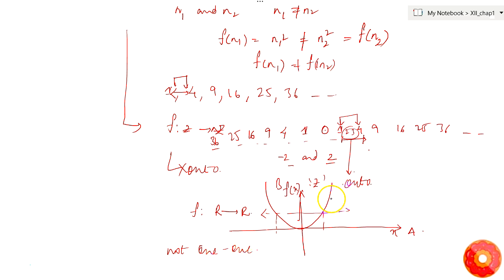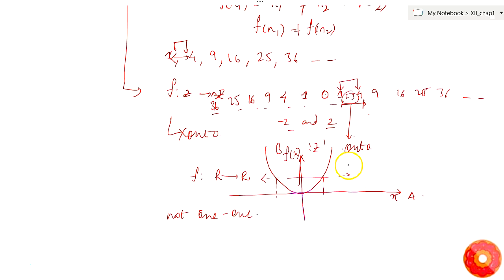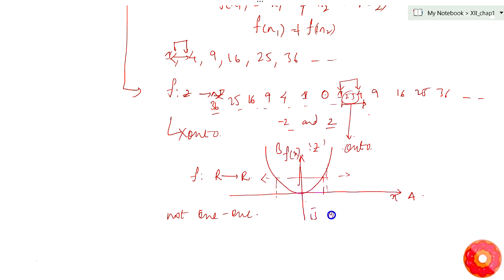However, the span of f(x) fills the whole span of real numbers — we can see there are no gaps between any two images. So the given function f mapping from ℝ to ℝ is onto in nature.